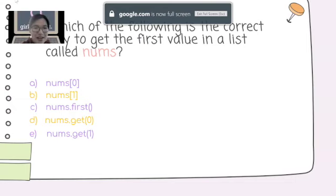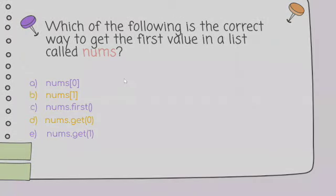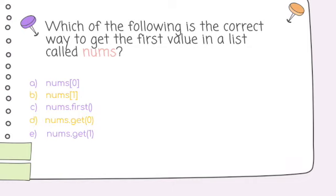Which of the following is the correct way to get the first value in a list called nums? There's some confusion about whether nums is an array or a list. Remember it's been called a list here — an ArrayList. You can't just index it like a regular array to get the first value. You'll have to use the get method. So D — nums.get(0) — is the correct answer.